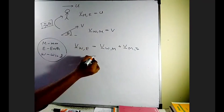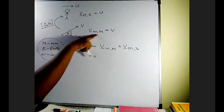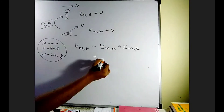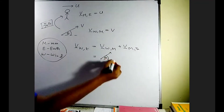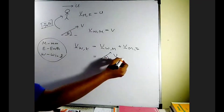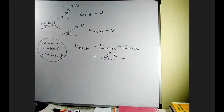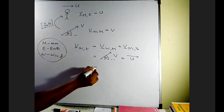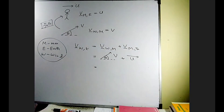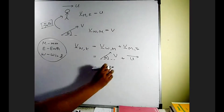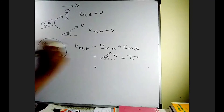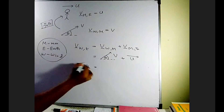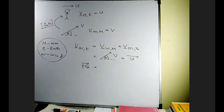Now substituting: velocity of wind with respect to man has magnitude v and direction theta north of east. Velocity of man with respect to earth is u, directed to the right-hand side. From this we can construct the velocity triangle, which is the next step in relative velocity problems.